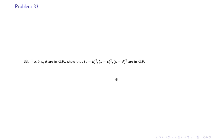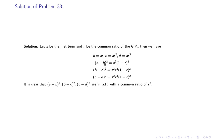Problem 33: if A, B, C, D are in GP, show that (A-B)², (B-C)², (C-D)² are in GP. This problem is similar to the previous one; instead of (1+R)² we are left with (1-R)² for each term. So we see that these are again in geometric progression with common ratio R².